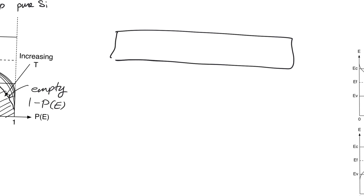Now let's calculate the concentration of electrons, N, in a piece of silicon — the number of electrons per centimeter cubed, which is the volumetric density of electrons. The probability function p(E), the Fermi-Dirac function, is a conditional probability: it tells us the probability of finding an electron at a certain energy level if that level exists. So we need to ask: what is the presence or absence of an energy level at a given energy?